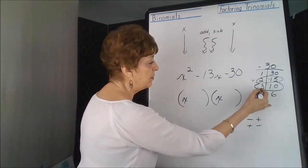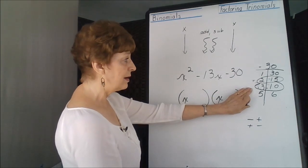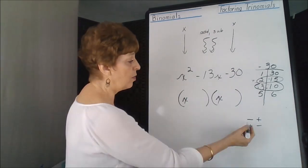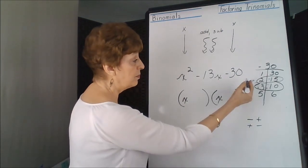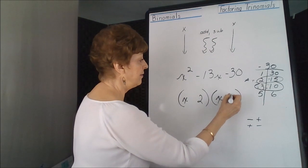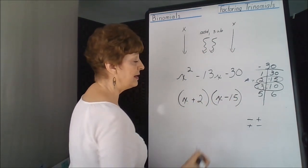That'll give us 13. And we could also have two positives. But if we do that, then we mess up the last one that has to have one of each. So the only possibility that we can have is this one, a 2 and a 15. One has to be positive, one has to be negative.